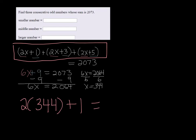So 2 times 344 plus 1 is 689. So the first one is 689, and then the next odd number would be 691. Just add 2 to that. And then the last one would be 693.